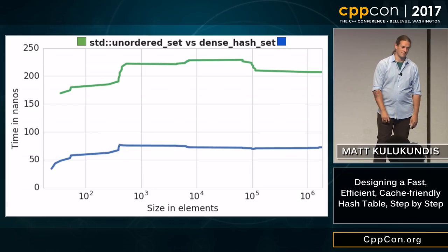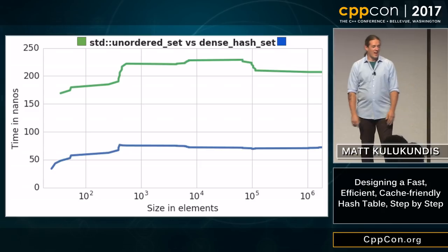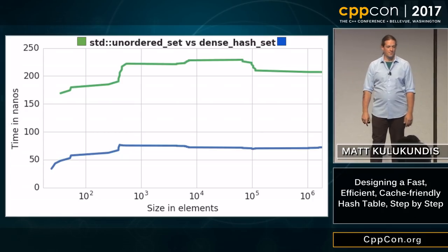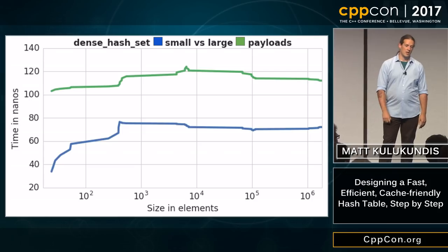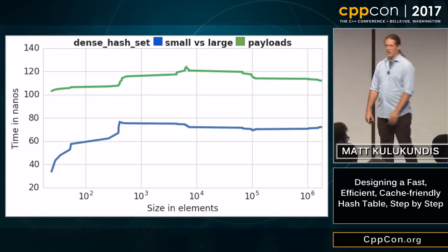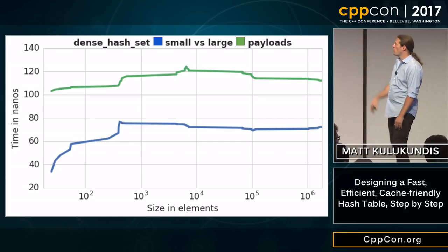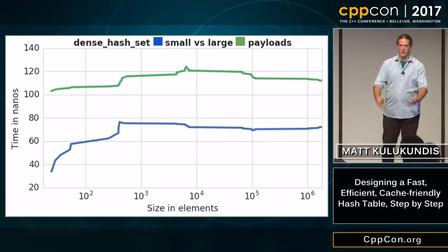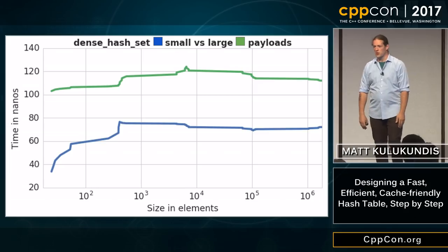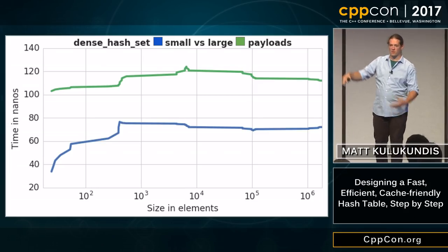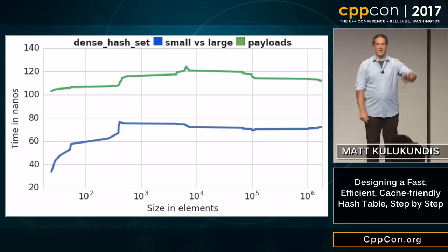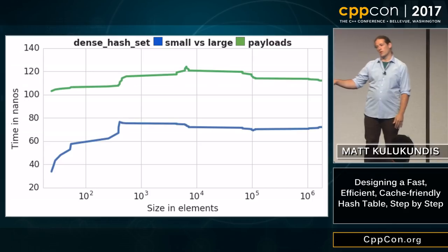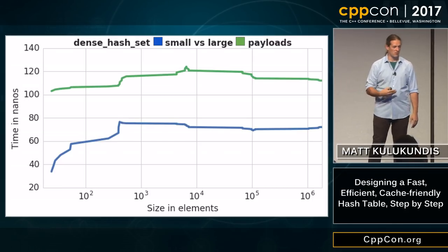Dense hash set only has a couple small problems. It's a little bit old and crufty, so you're gonna need to update it to the more modern APIs. It has to have those sentinels in it. And its performance degrades with the size of its keys — this is four-byte keys versus 64-byte keys, and the performance goes down about 80%, almost 2x. You have your dense hash set somewhere and somebody over there adds some entries into that struct and all of a sudden your performance falls off a cliff. That's not a fun trade.